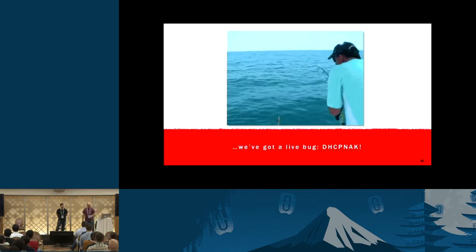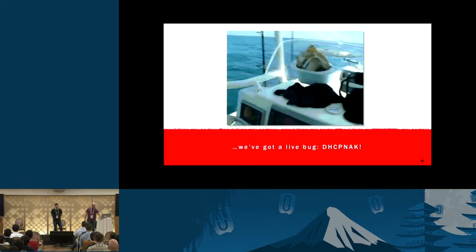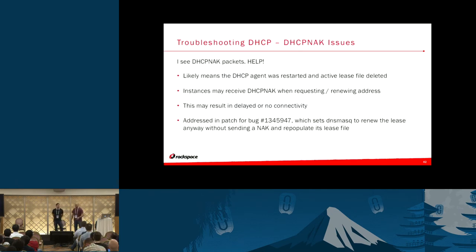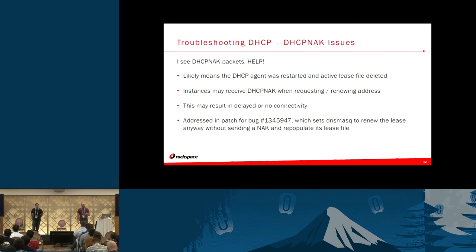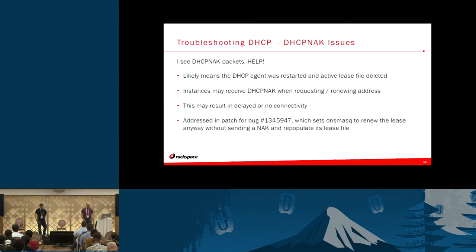Let's talk about a live bug that could be affecting a lot of you without realizing it. Say you've spun up an instance with no error but then realize the instance is not available — chances are DHCP is not working. You run a packet capture and see that the DHCP discover or DHCP renewal is making it to the agent, but the agent is sending a DHCP NAK packet. This likely means the DHCP agent was restarted and the active lease database was deleted. Whenever an instance receives a DHCP NAK, it drops its IP off its interface and restarts the entire DHCP lifecycle again, resulting in brief momentary downtime.